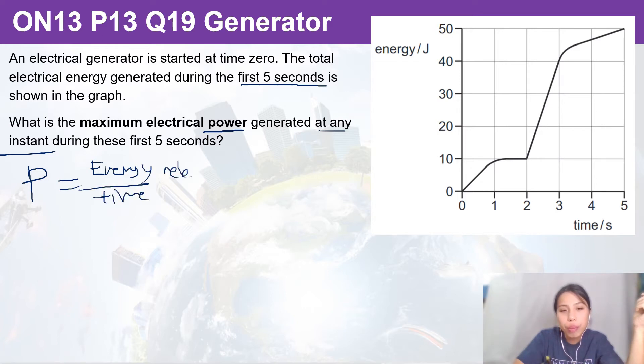The more proper mathematical way to write this is change in energy over change in time. So whenever you see this delta E over delta t, this means this is also the gradient of an E-t graph.